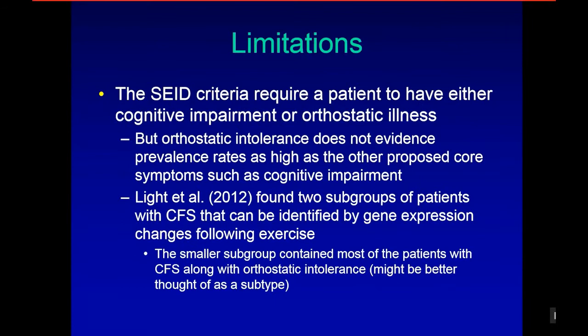A limitation of the SEID IOM criteria is that they require a patient to have cognitive impairment or orthostatic intolerance. But orthostatic intolerance does not have prevalence rates as high as the other proposed core symptoms, such as cognitive impairment. Light has found two subgroups of patients with CFS identifiable by gene expression changes following exercise, and the smallest subgroup contained most patients with orthostatic intolerance — this might be better thought of as a subtype rather than a core symptom.